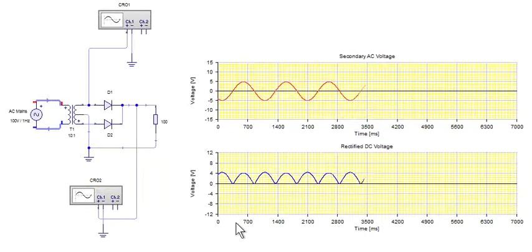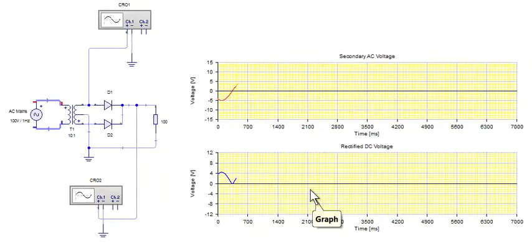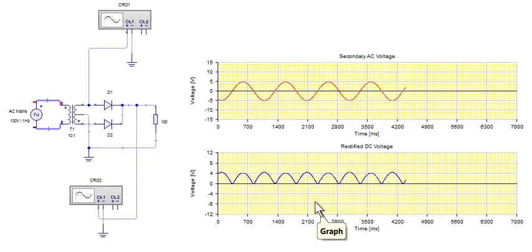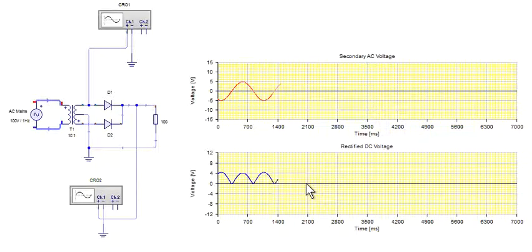One thing is very important here to note: the speed of the upper waveform and the speed of the lower waveform. If you observe it carefully, you will see that the ripple frequency of the lower, means the rectified DC voltage, is double than the speed of secondary AC voltage.